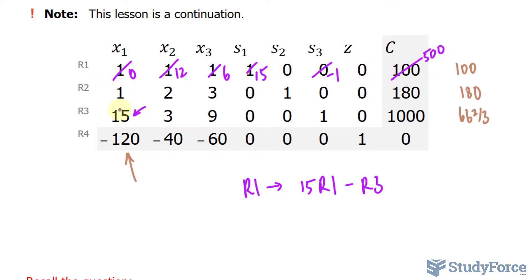To make this 1 into a 0, I'll multiply all of row 2 by 15 and minus row 3. So row 2 becomes row 2 times 15 minus row 3. 15 minus 15 makes it a 0. 2 times 15 is 30, minus 3 is 27. And you continue to do this where you end up with